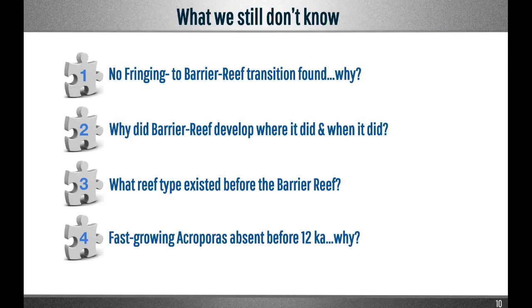But none of these studies identified any fringing reef sequence. No fringing reef was found beneath the Papiti barrier reef, and none was found at the base of the reef front cores. So why did the barrier reef develop where it did, when it did? And before the barrier reef, what type of reef existed as sea level was rising? And why were the fast-growing acroporids absent before 12,000 years?